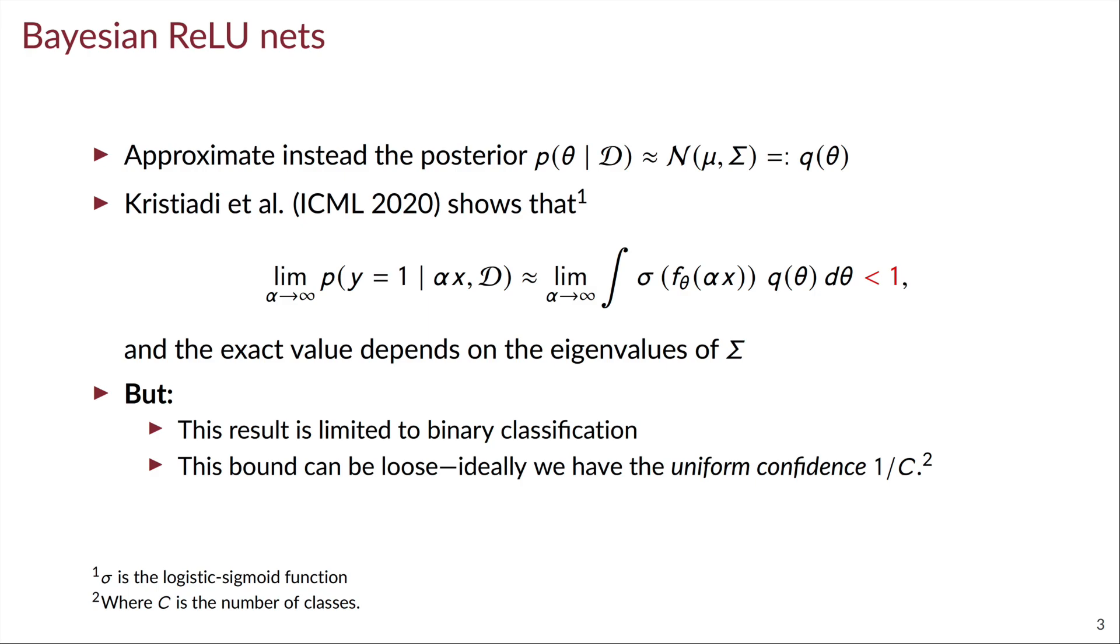But notice here the problem is that this analysis only holds in the binary classification case and that this bound can be quite loose, whereas we actually want to have the uniform confidence prediction, meaning that in the limit of α tends to infinity, our prediction probability will always be 1 over c, where c is the number of classes.